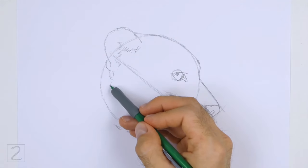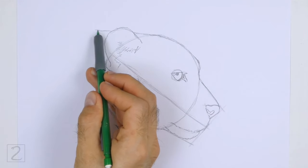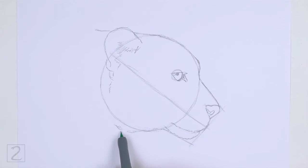Draw short strokes below the ear for fur. On the left side, draw a couple of short horizontal lines for the visible section of the neck.